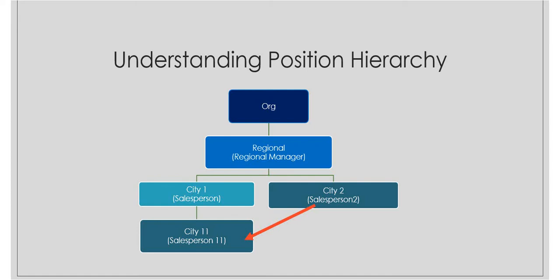The main org is their head office with multiple regional offices. Below the regional offices we have City One, City Two, and City One-One as sub business units. In brackets is the name of each user linked to that business unit — regional manager is associated to the regional business unit, salesperson to City One, salesperson two to City Two, and salesperson one-one to City One-One.